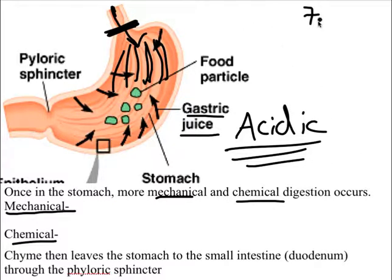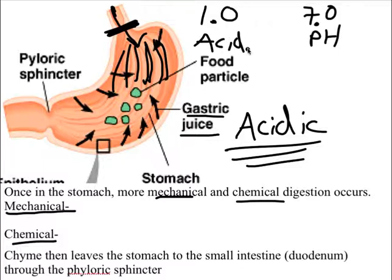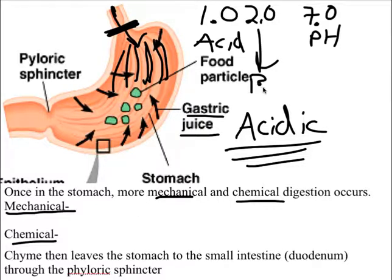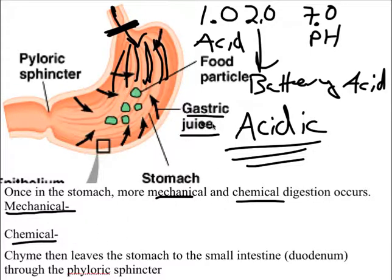Then chemicals enter the stomach in the form of gastric juice — very, very acidic. Normal water is at 7.0 on the pH scale; the most acidic possible is 1.0. The acid in our stomach and part of our gastric juice is at a pH of 2.0 — the same as battery acid — very acidic. This gastric juice performs chemical digestion on the nutrients while the stomach performs mechanical digestion.